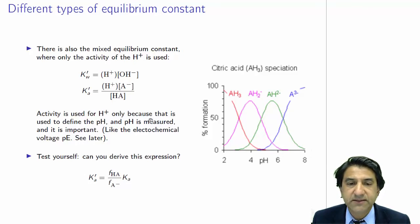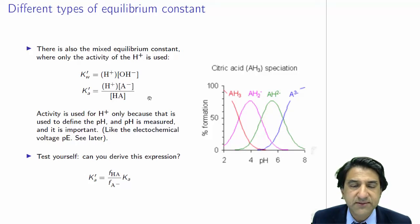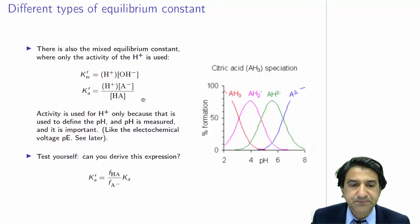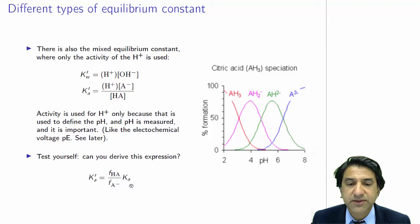pH directly gives the activity, whereas concentrations can be obtained in other ways, by calibration or by weighing — so these mixed constants are quite useful. Here's a test: can you derive this expression? K-dash-A equals a constant times the normal thermodynamic equilibrium constant. This one involves activities, and here is a ratio of activities relating those two. See if you can test yourself on that.